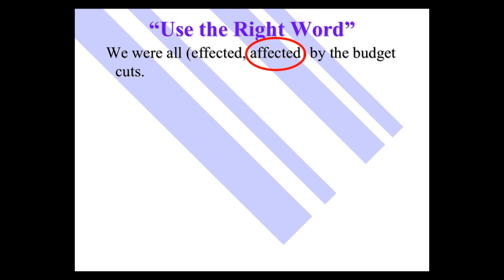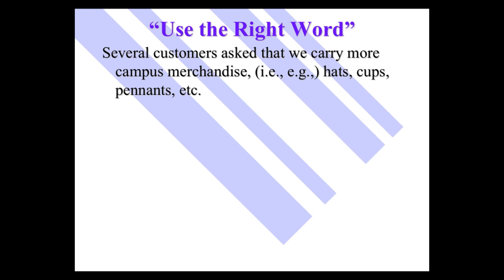Here's another very commonly confused set. Several customers ask that we carry more campus merchandise, i.e. or e.g., hats, cups, pennants, etc. I.e. means that is. E.g. means for example. So if you're going to explain a little bit more about what follows, that is, you'd use i.e. If you were going to give specific examples, you would use e.g. So we've got hats, cups, pennants, etc. Those are specific examples, so e.g.